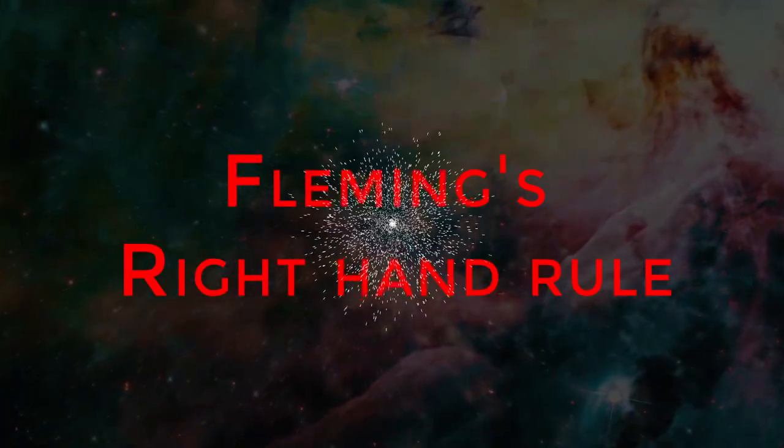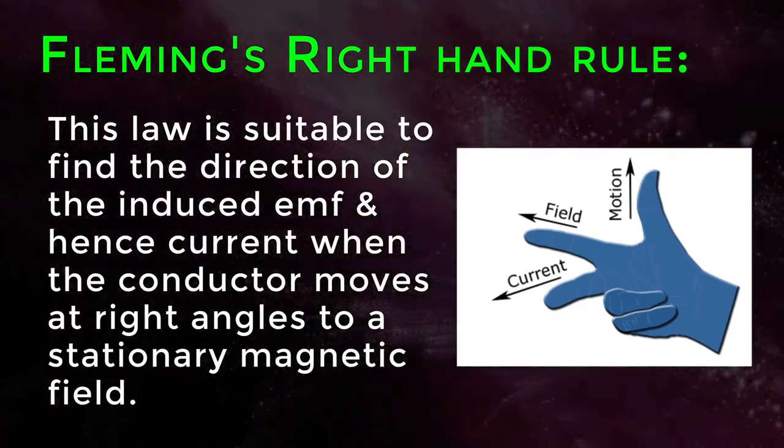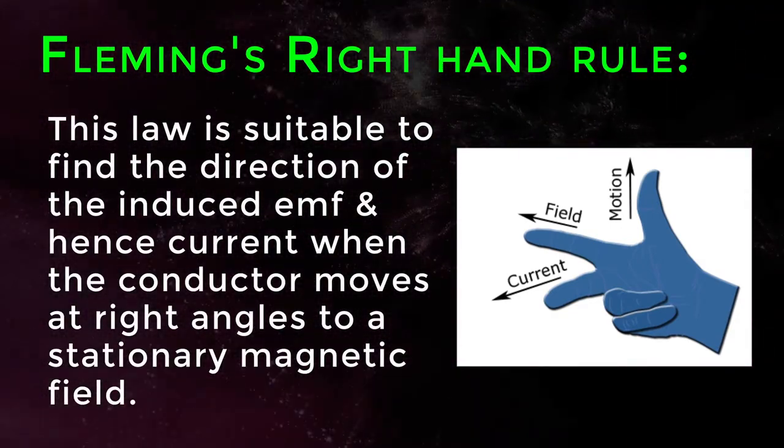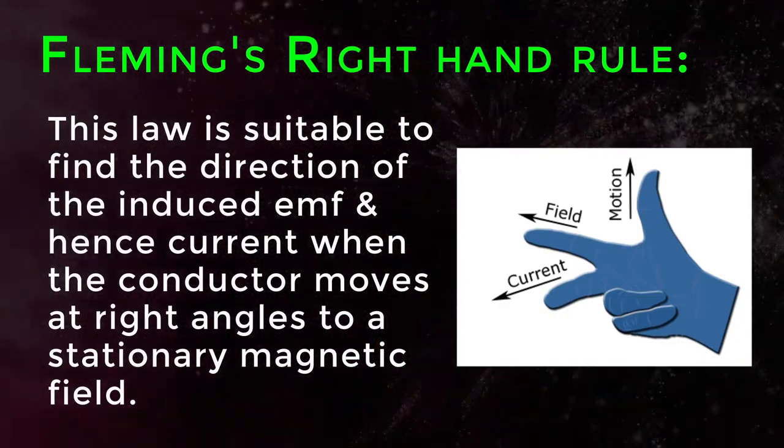Fleming's Right Hand Rule. This law is suitable to find the direction of the induced EMF and hence current when the conductor moves at right angles to a stationary magnetic field.